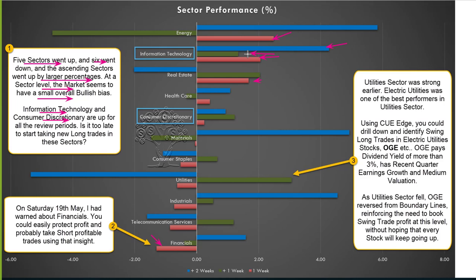For swing trading the best opportunities had come at that time — when they started to go up. Using the Q-Edge sector/industry/stock drill-down, we could identify those opportunities then. Can we still take long positions? We could, but if we had taken long positions in Consumer Discretionary and Information Technology when they started going up, we would have had much higher profit. That is our preferred approach. Because they are already up for at least one month, for swing trading we may be cautious — it may be time that some of these stocks will pull back at least for a bit.